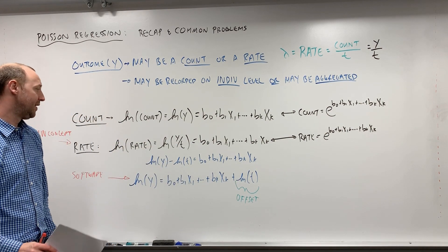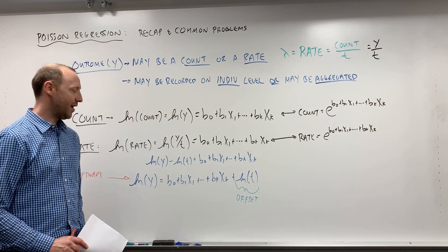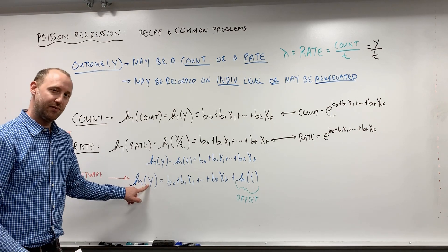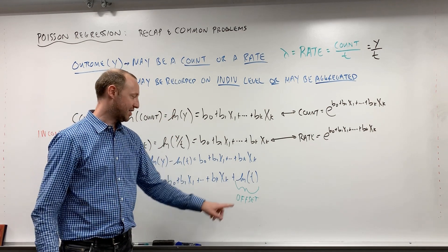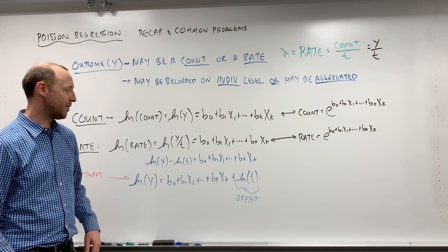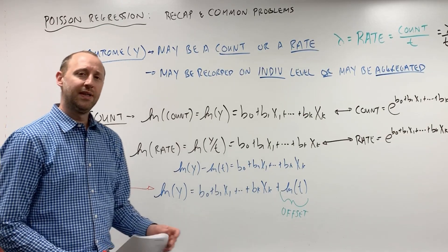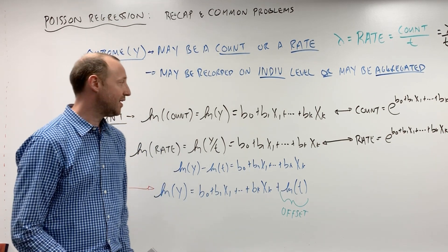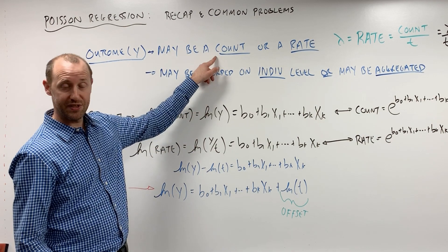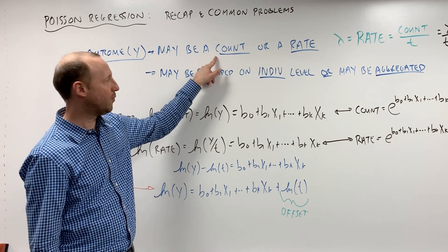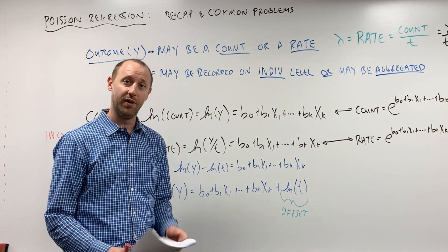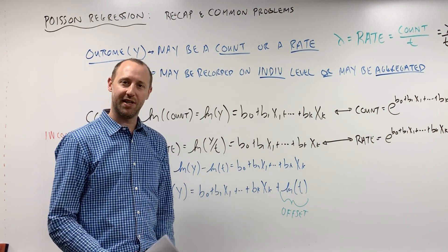We can think of it this way: we want to model the log number of occurrences, but if everyone has been followed for a different amount of time we need to adjust for that. The offset accounts for the different follow-up time of each individual. Now let's look at the medical expenditures data — the number of visits to a physician in one year, where everyone is followed for one year, so we have count data measured at the individual level.